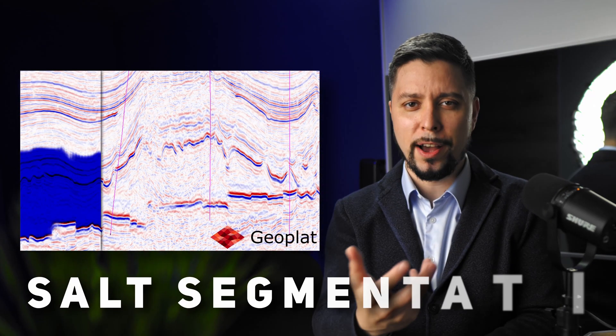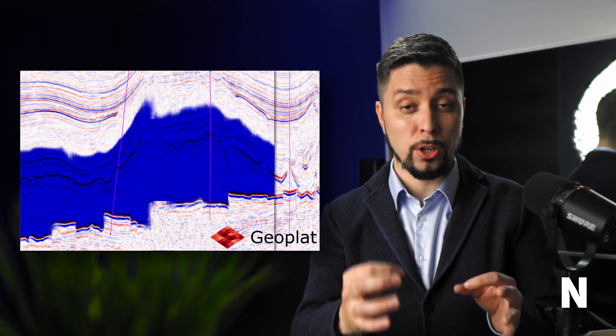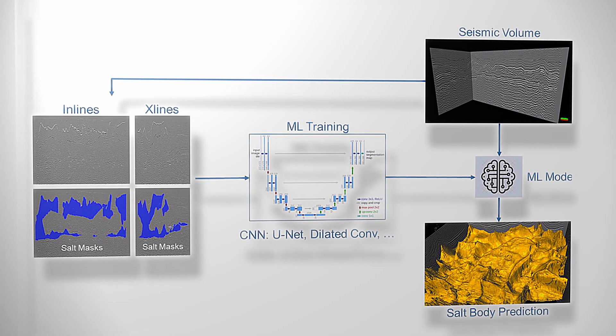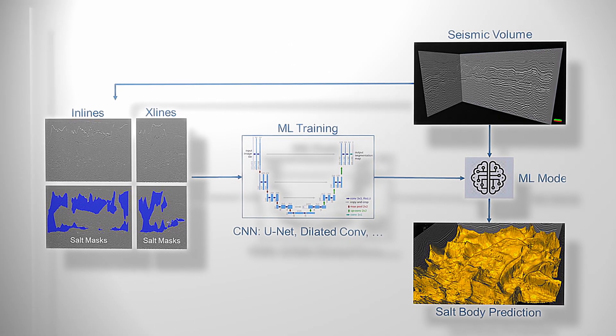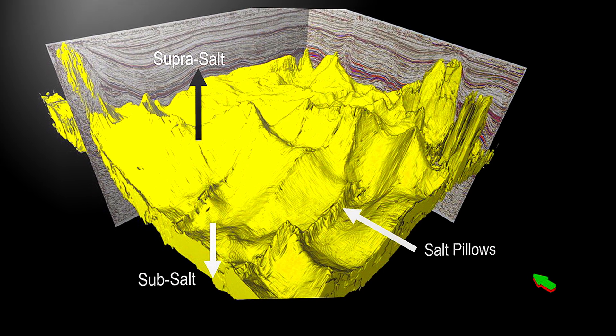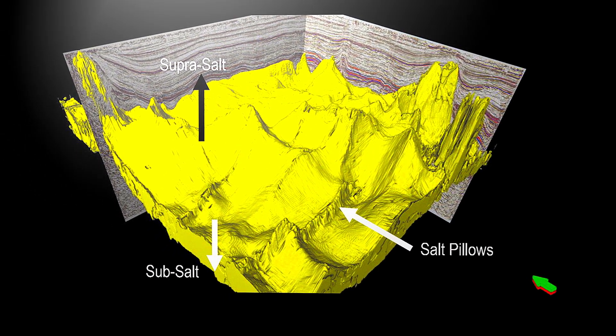In the Groningen field, there are faulting structures caused by salt tectonics. They use a CNN-based approach to identify these salt bodies in 3D seismic data. To train the network, they've picked the top and base of the salts in almost 30 cross-sections. After training, they applied the CNN model to the entire dataset.